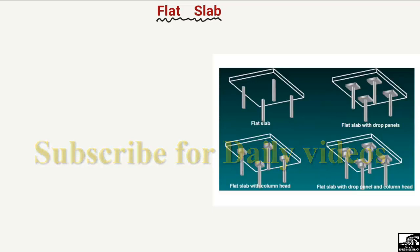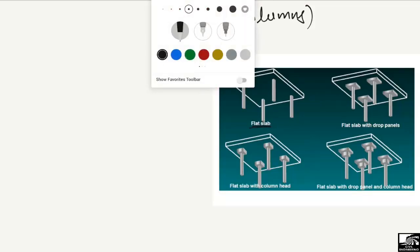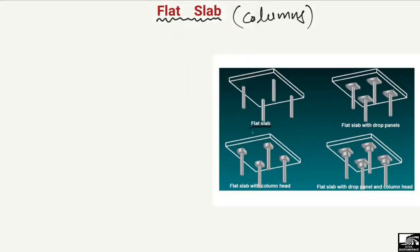The second type of slab is the flat slab. A flat slab is a type of slab which is only supported by columns — there are no beams. If we look at this figure, we can see the flat slab supported by four columns, the vertical members. Such a type of slab supported only by columns is known as the flat slab, and there are four further subtypes.